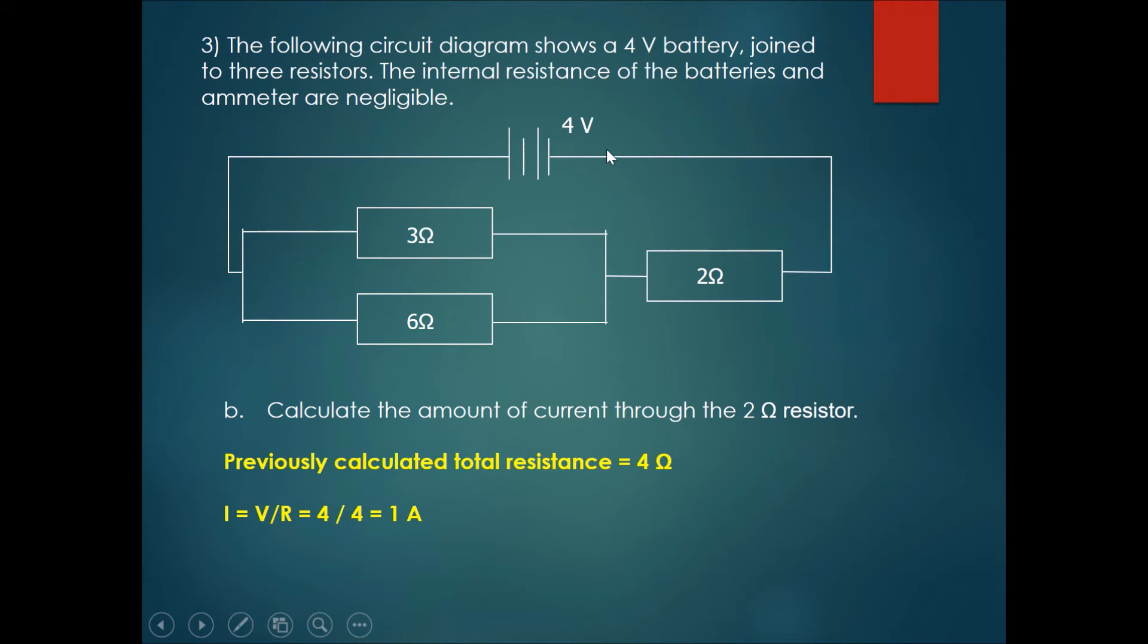The current coming out through the 4 volt battery and going through the 2 ohm resistor is 1 ampere.